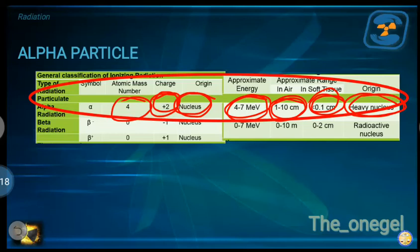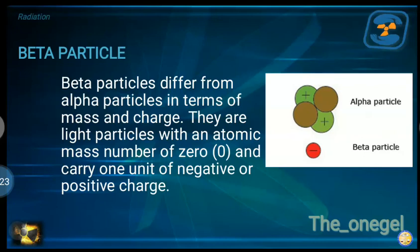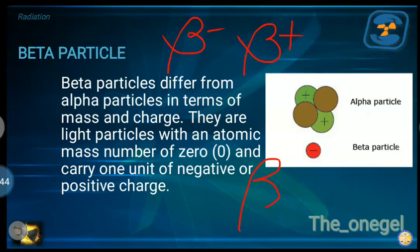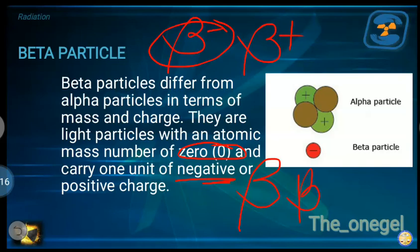Next, we have the beta particle. There are two types: beta minus and beta plus. Beta particles differ from alpha particles in terms of mass and charge. They are light particles with an atomic mass number of 0, because they have no protons. They carry one unit of negative or positive electric charge — negative for beta minus, and positive for beta plus.